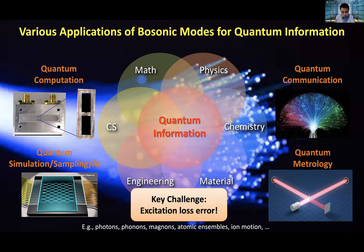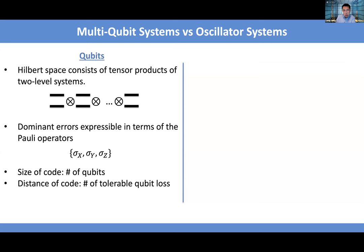How can we keep quantum information intact while there's excitation loss? First, let's look at how we do it for qubit systems if there is loss. We introduce a quantum error correction formalism. The essence of quantum error correction is to introduce redundancy, so you have a larger Hilbert space. Different logical states are well-separated so that if an error occurs, you can detect and correct those errors. For two-level systems, you need multiple copies to achieve redundancy.